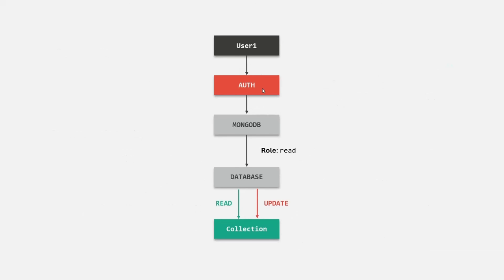So once we have authentication and authorization in place, before connecting to the MongoDB server, a user will have to authenticate themselves. If authenticated successfully, they will be able to access databases in the MongoDB server. After gaining access, based on their role, they can perform certain actions. For example, if the user has only read access, they can only read data from that database. If they try to perform an update or delete operation, since they have only read access and no write access, that action will be blocked. This is the advantage of having authentication and authorization in place.